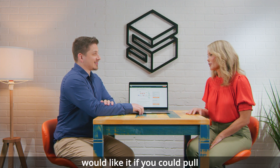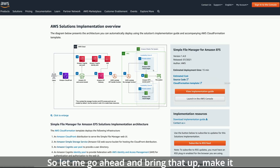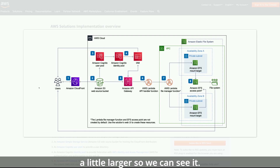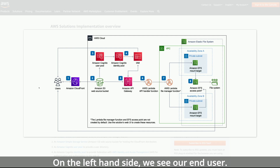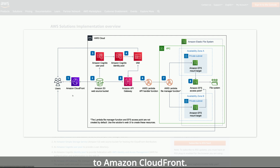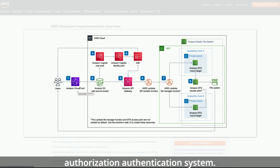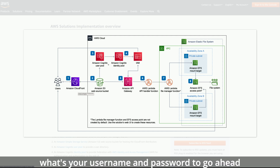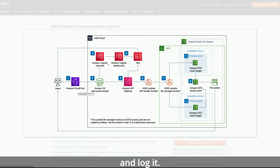Let me bring up the architecture and make it a little larger so we can see it. On the left hand side, we see our end user — that's our person traveling out in the world with a laptop or a phone. They need files from their EFS file system, so they connect over to Amazon CloudFront, which is their web portal. They get an authorization and authentication system known as Amazon Cognito, which handles the username and password login.